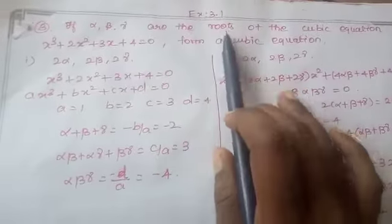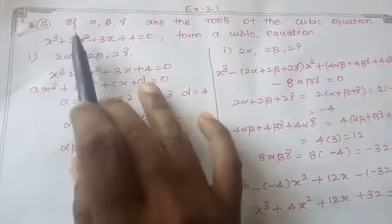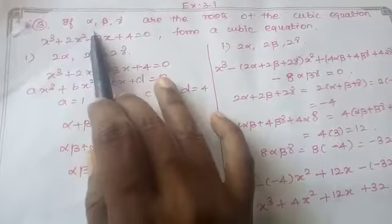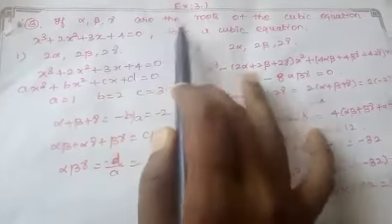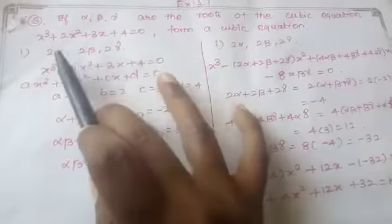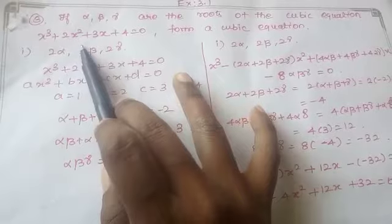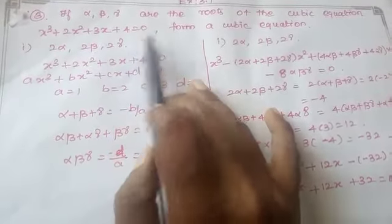Exercise 3.1. If alpha, beta, gamma are the roots of the cubic equation x cubed plus 2x squared plus 3x plus 4 equal to 0,